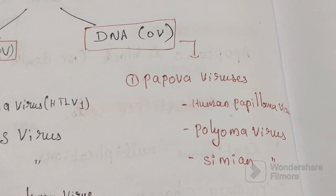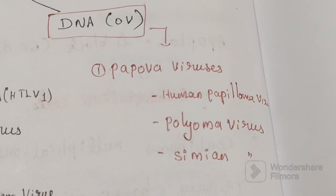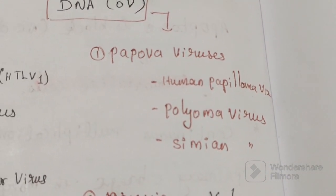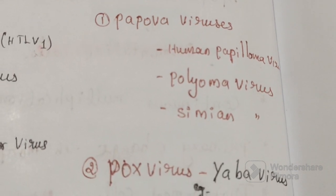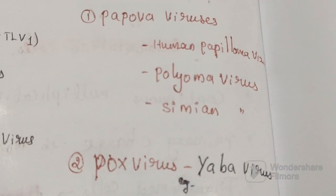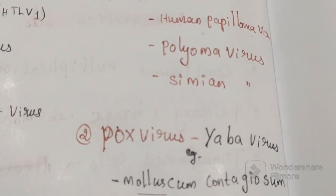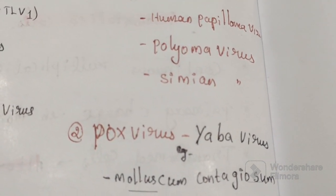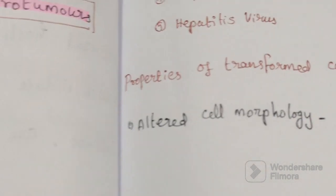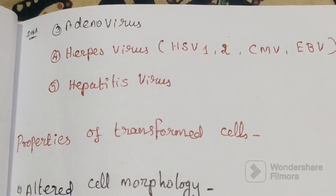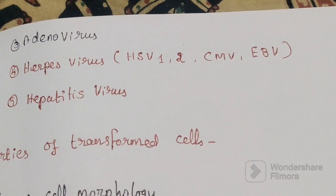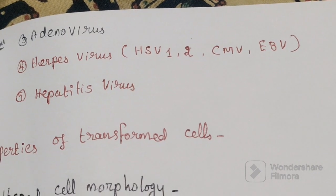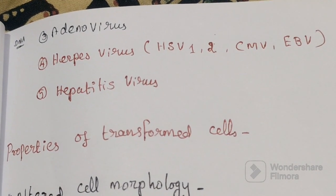DNA oncogenic viruses include: first, Papovavirus, which includes human papillomavirus, polyoma virus, and simian virus; second, Poxvirus, including Epstein-Barr virus and molluscum contagiosum; third, Adenovirus; fourth, Herpesvirus, including Herpesvirus 1 and 2, cytomegalovirus, and Epstein-Barr virus; and fifth, Hepatitis virus.